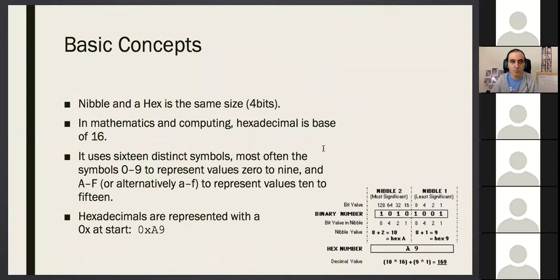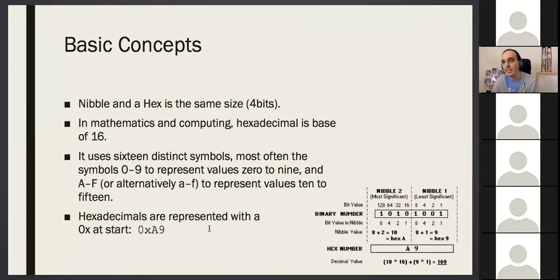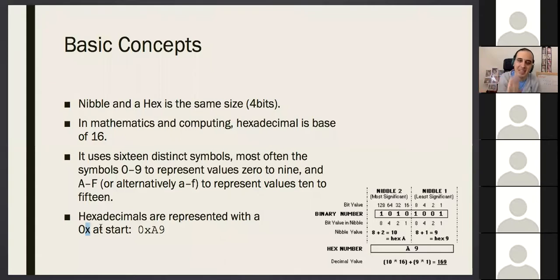Another representation: a nibble is a hex — they are the same size. Hexadecimals are represented with a 0x at the start. If you see just a 9, it is 9 in decimals. But if you see 0x9, it means this is a hexadecimal 9. It will make a difference.